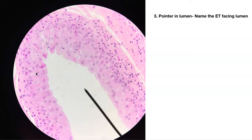Number three. Pointer in the lumen. We know this is stratified — more than one layer thick. But look at those apical cells; these are weird dome-shaped cells. This one looks like it's got two nuclei in it — just weird-looking cells. This is transitional epithelial tissue.